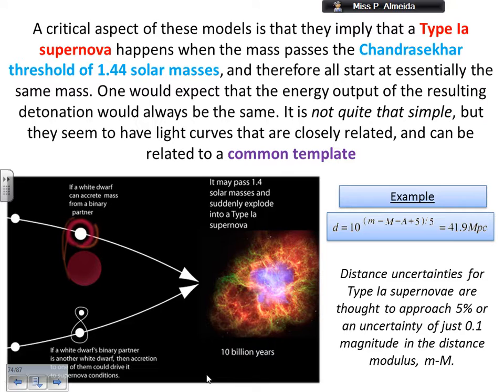Sometimes I need to use approximations because the energy output from the detonation is not always quite the same. But I can still do those approximations because that's really the best option I have — there is nothing better at the moment to estimate these distances. The distance uncertainties for the type 1a supernova are about 5%, corresponding to a difference in magnitude of about 0.1.